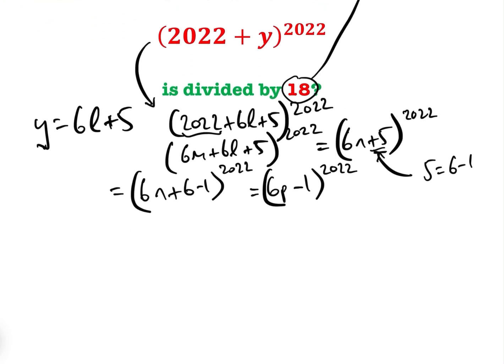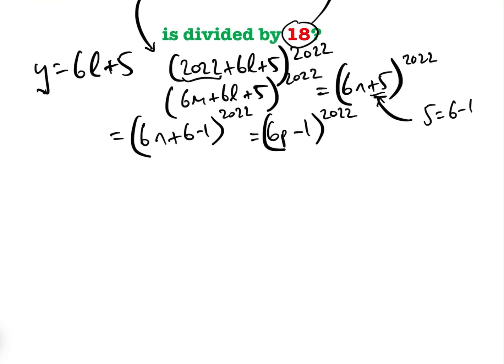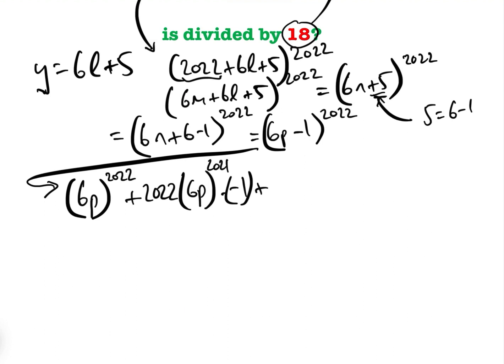Now, what we have to do clearly is expand it. In the exam, you won't need to do this bit, but I'm going to do it anyway just to explain why you don't need to do it. So let's have a look at all of the terms. We have basically (6p)^2022 + 2022 × (6p)^2021 × (-1) + ... Let's go to the second to last term now. We have (6p)^1 × 2022 × (-1)^2021. And then finally, we have + (-1)^2022.